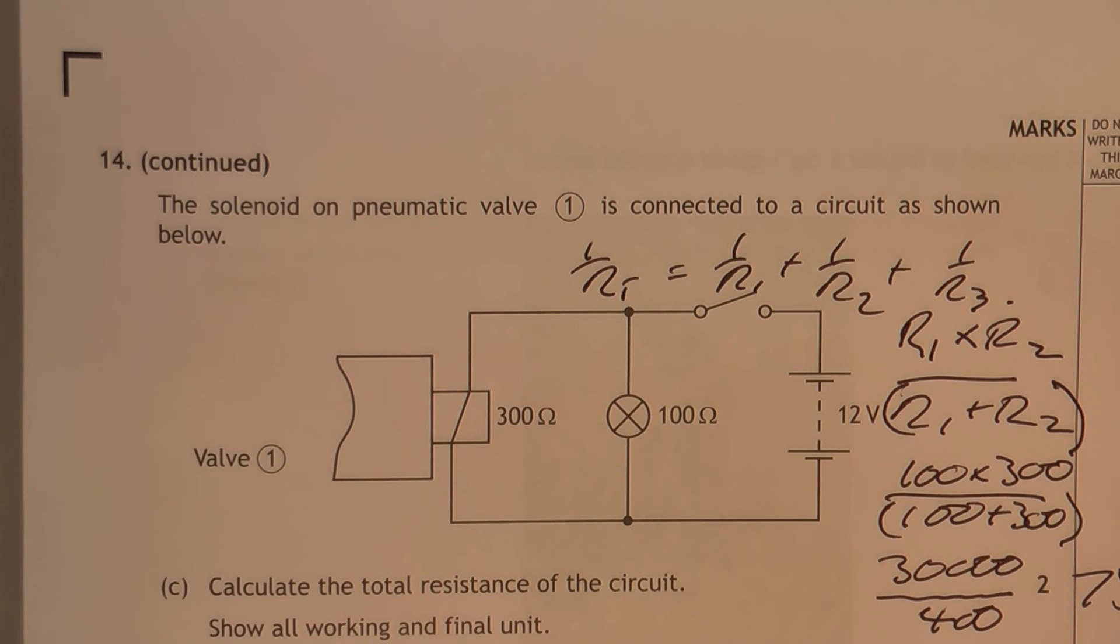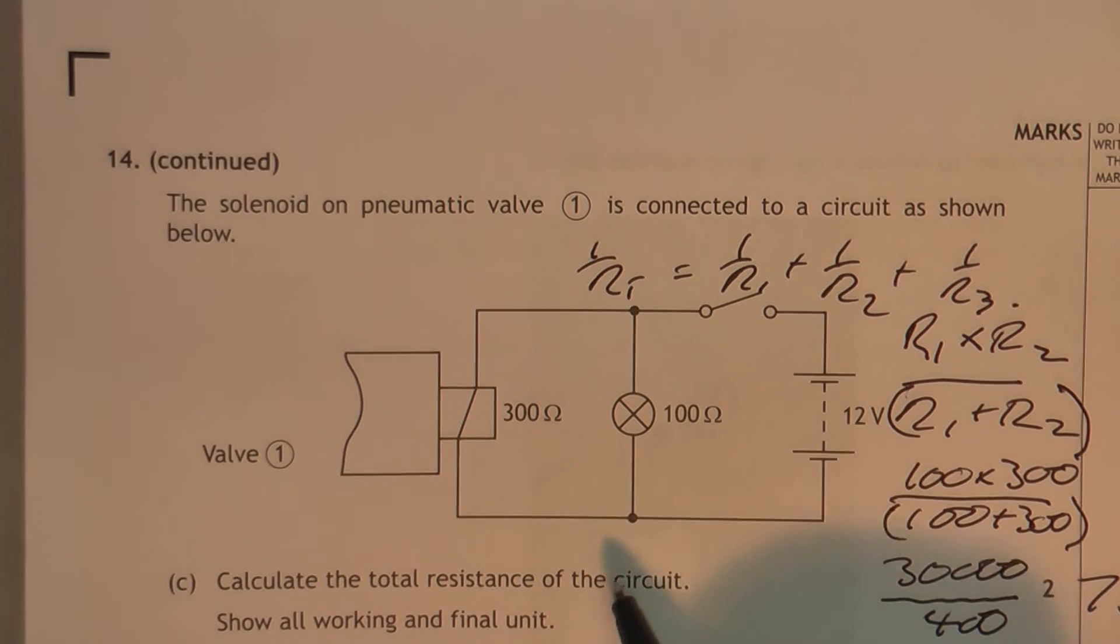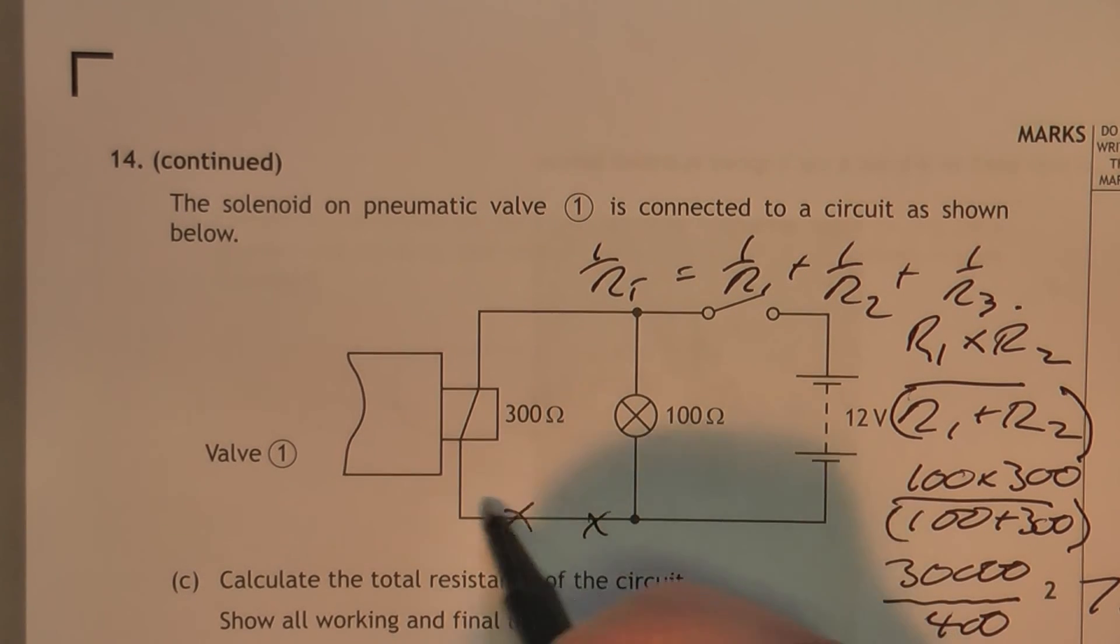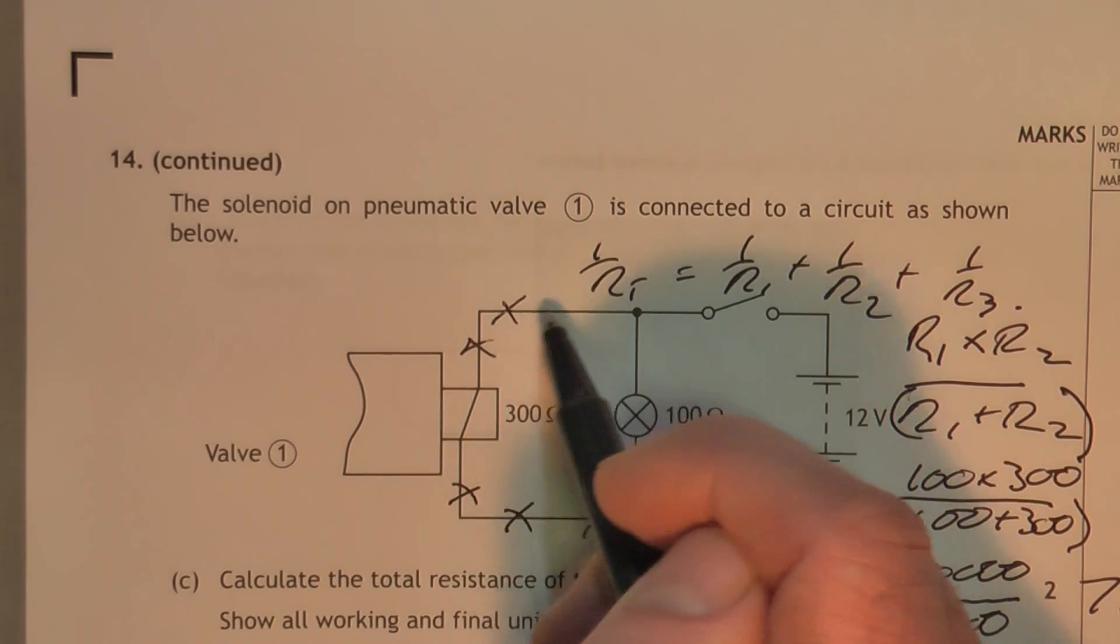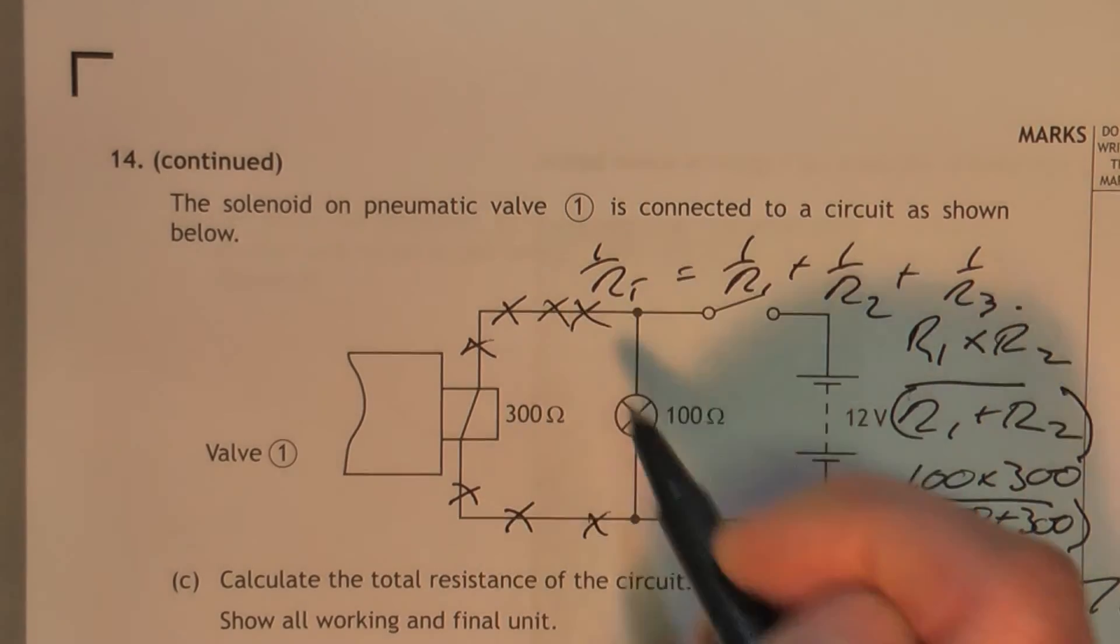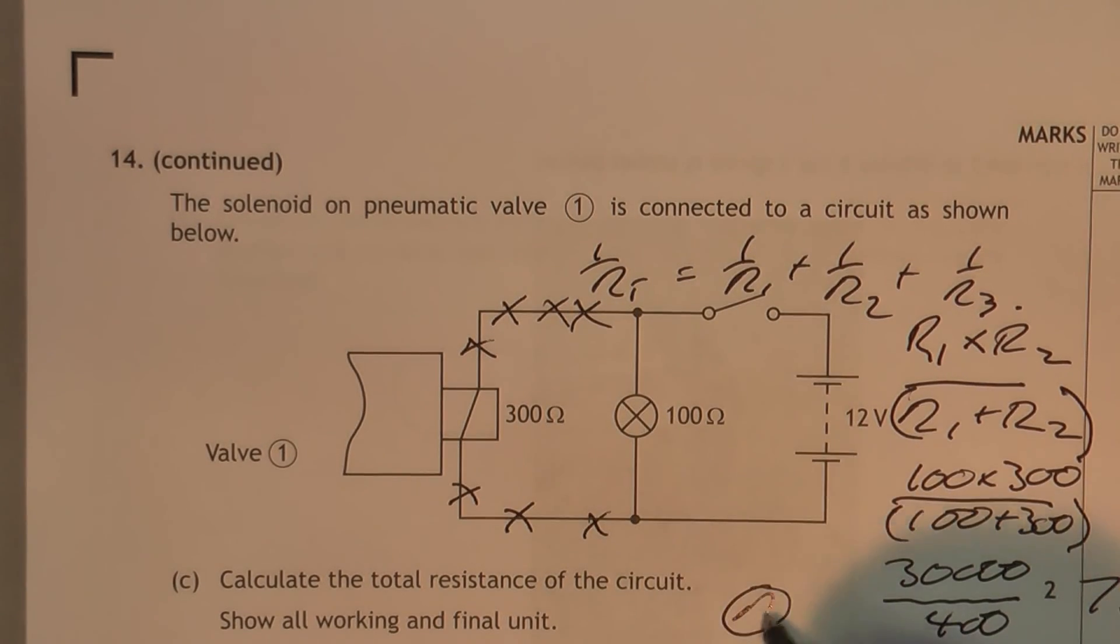The question goes on and asks for an ammeter to be drawn and indicate with an x to measure the current through the solenoid. Right. To measure the current through the solenoid you can put an x anywhere in this wire here and the symbol for an ammeter of course is an A.